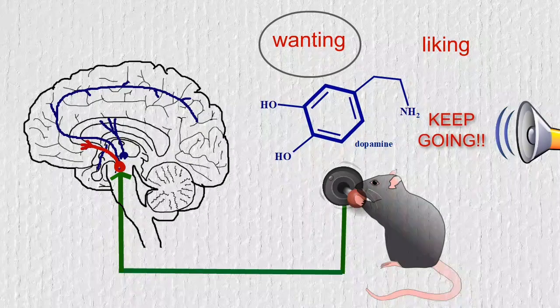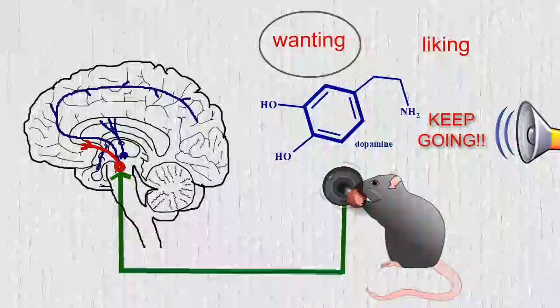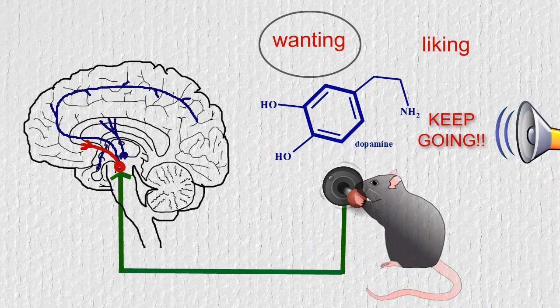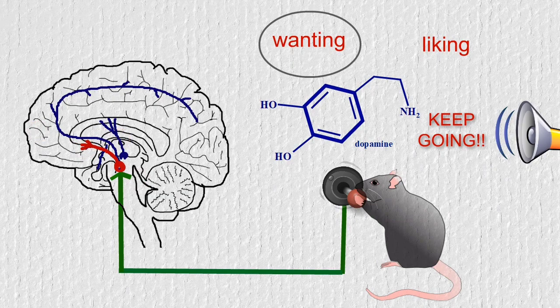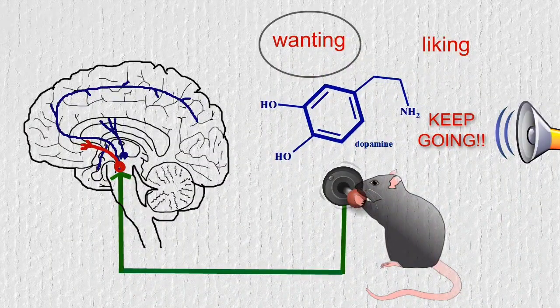So it's actually the other way around as originally assumed. We experience pleasure, actually in some brain regions known as the hedonic hotspots, and because of that, the brain wants to make sure we get more of it and releases dopamine to keep us going.